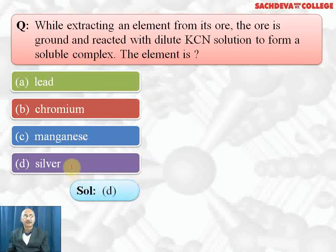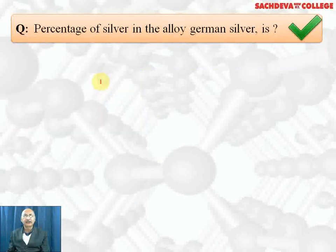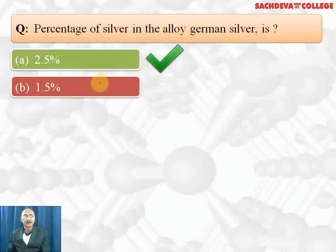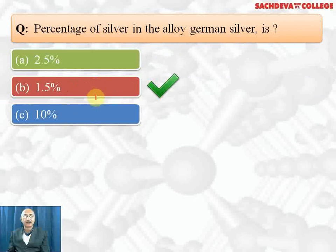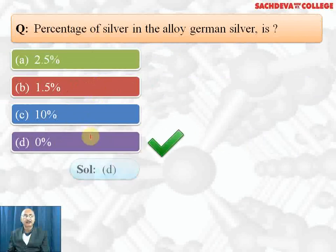Percentage of silver in German silver: 2.5%, 1.5%, 10%, zero percent. Zero percent. German silver does not contain any silver, it contains zinc, copper, and nickel.